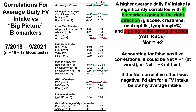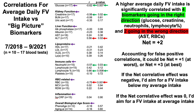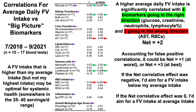If the net correlative effect were overall negative, I'd aim for a fruit and vegetable intake below my average. If net zero, I'd shoot for my average. But because the overall net score is positive — at worst plus one, at best plus three — that suggests a fruit and vegetable intake higher than my average but not my highest intake may be optimal for systemic health. That would indicate somewhere in the 35 to 40 servings per day range.